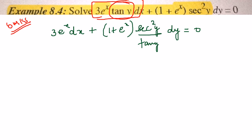Now I want to remove (1 + e^x) from the second term so that it will have all y components. So again I am going to divide by (1 + e^x).